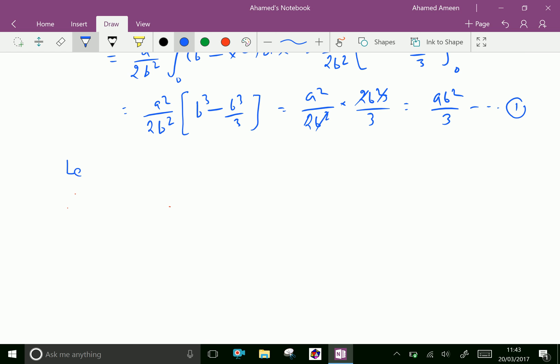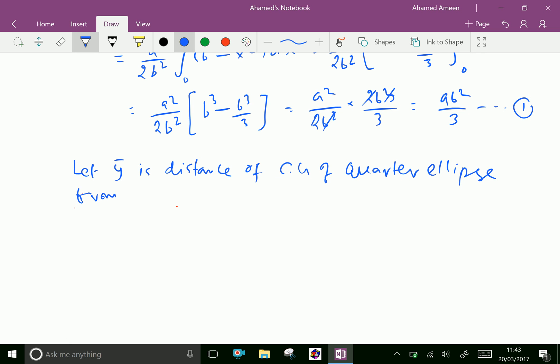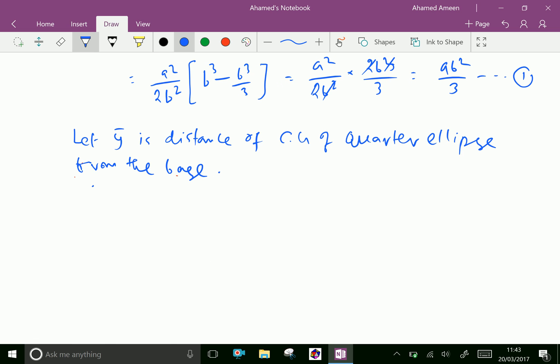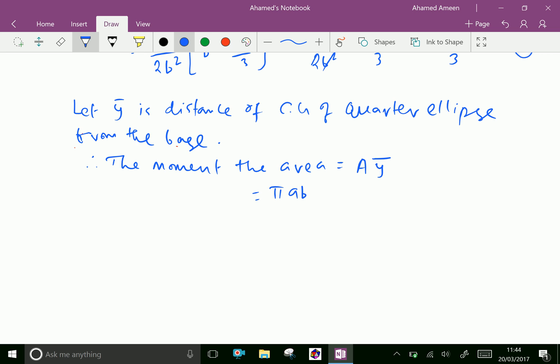Let ȳ be the distance of CG of the quarter ellipse from the base. Therefore, the moment of the area equals A times ȳ. We know that area of the quarter ellipse is π ab over 4, and ȳ is what we need to find.